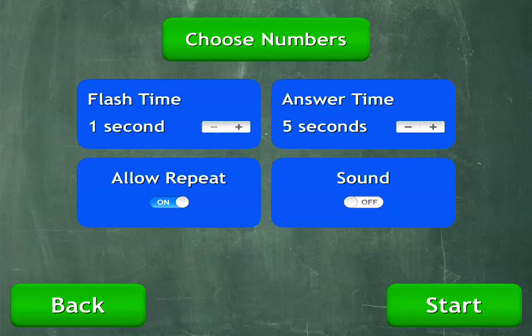And then here we have the answer time, and we can increase that. Some students just need a little longer to process. So I'm going to leave that at three seconds. There is a sound that makes a sound when they get the correct or incorrect answer. You might want to turn that off so it doesn't disrupt the rest of your classroom.